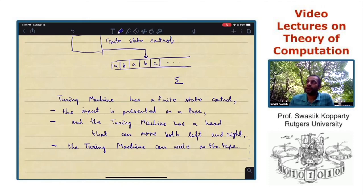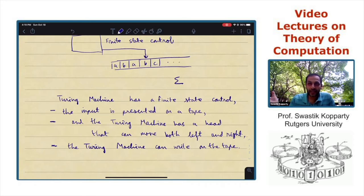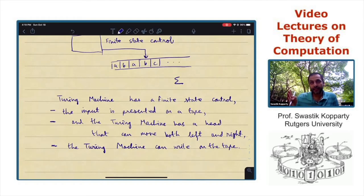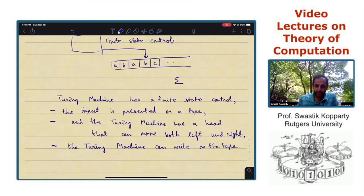There's one final aspect which I haven't said yet, which is that this tape is infinitely long. So the Turing machine has the ability to not only overwrite what has been written on the input, but it can also write things beyond that. And so it has access to a lot of memory, so to speak.